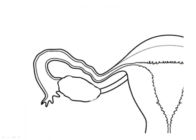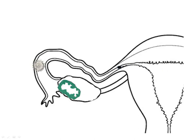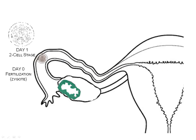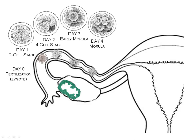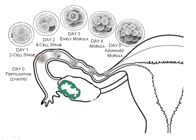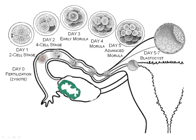Here we can see an animation of the fertilization process just after ovulation. Day zero is when the sperm and egg combine to form a zygote. This is followed by rapid cell division as the cell mass travels down the fallopian tube, assisted by cilia lining the fallopian tube like a conveyor belt. Along the end of the tube, it becomes a blastocyst and is ready for implantation into the endometrium.